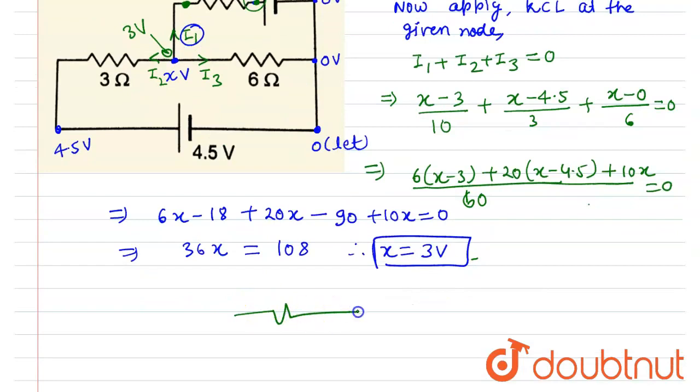If we can see, there is 10 ohm and the potential over here is 3 volt and potential over here is also 3 volt.